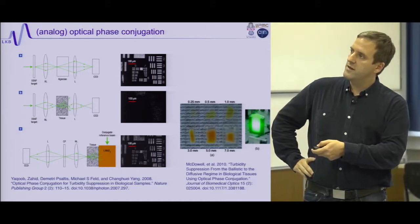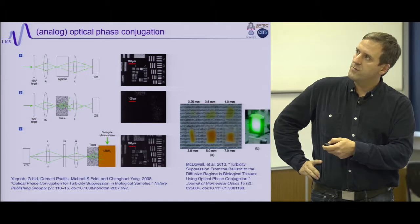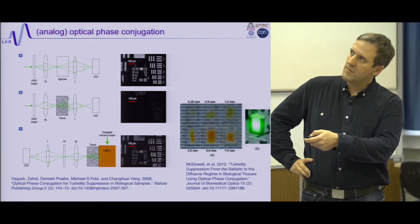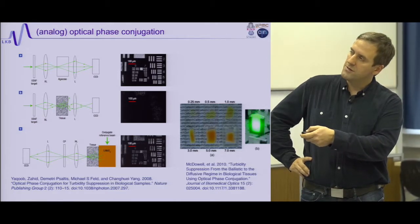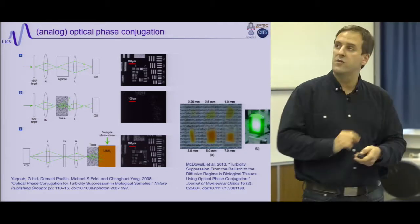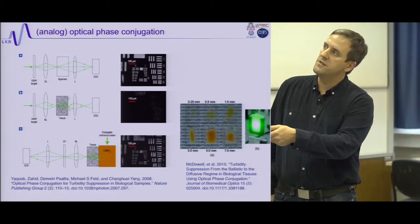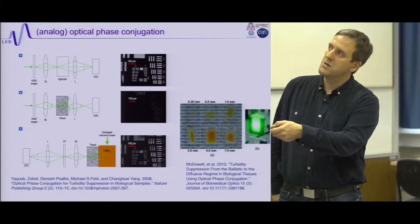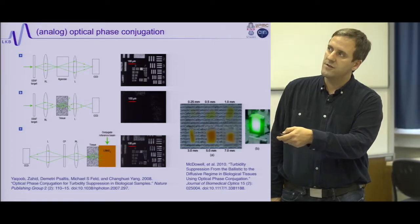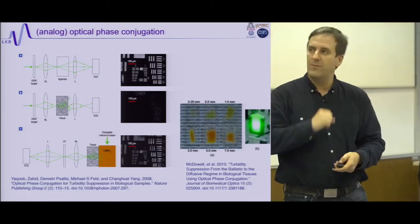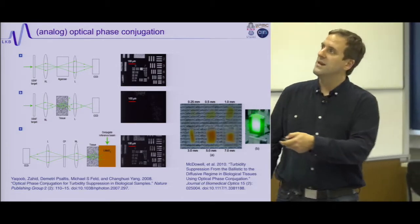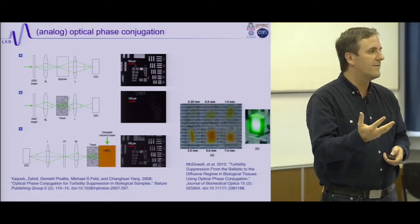This is an important paper from about 10 years ago from the group of Changhuei Yang at Caltech. You shine light on a resolution target, image it onto a CCD — this is what you see. Now with the same target but with a scattering sample (a piece of chicken tissue) inserted, you lose all detail and get speckle everywhere. What they did was analog optical phase conjugation: using a non-linear crystal, the incoming wave and a reference laser create an interference pattern that, through non-linear effects, re-emits the phase-conjugate wave.